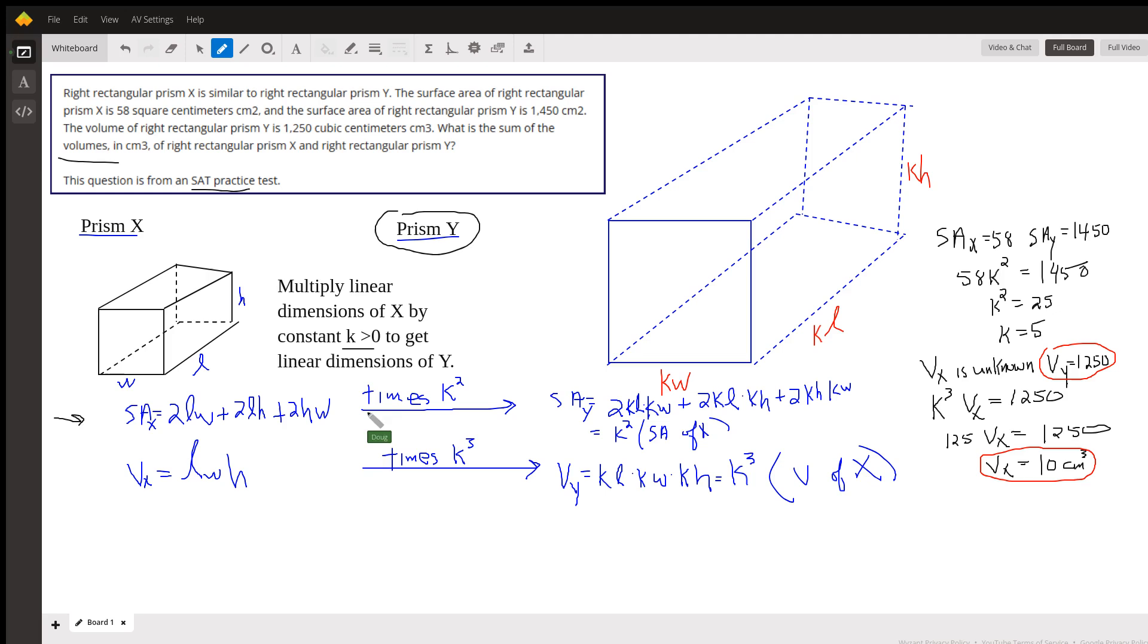And if I come up with the formula for the surface area of prism Y, I'll be taking KW times KL, but there's two of them, top and a bottom. And similarly for the sides and the front and the back.